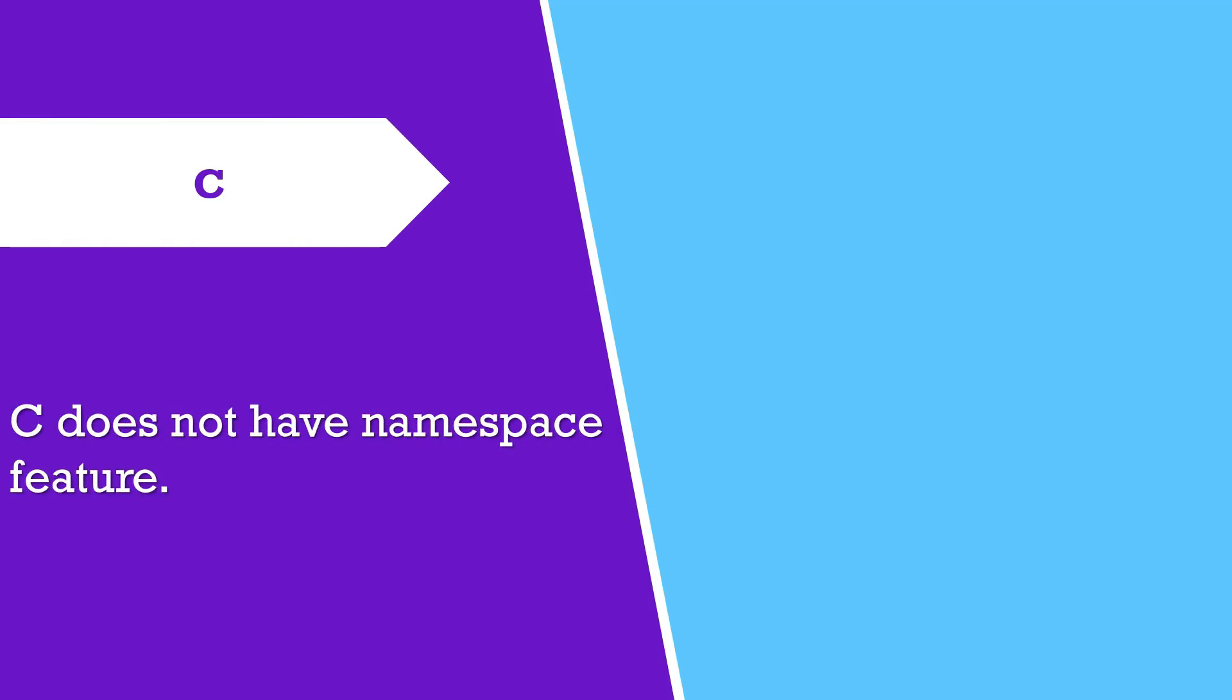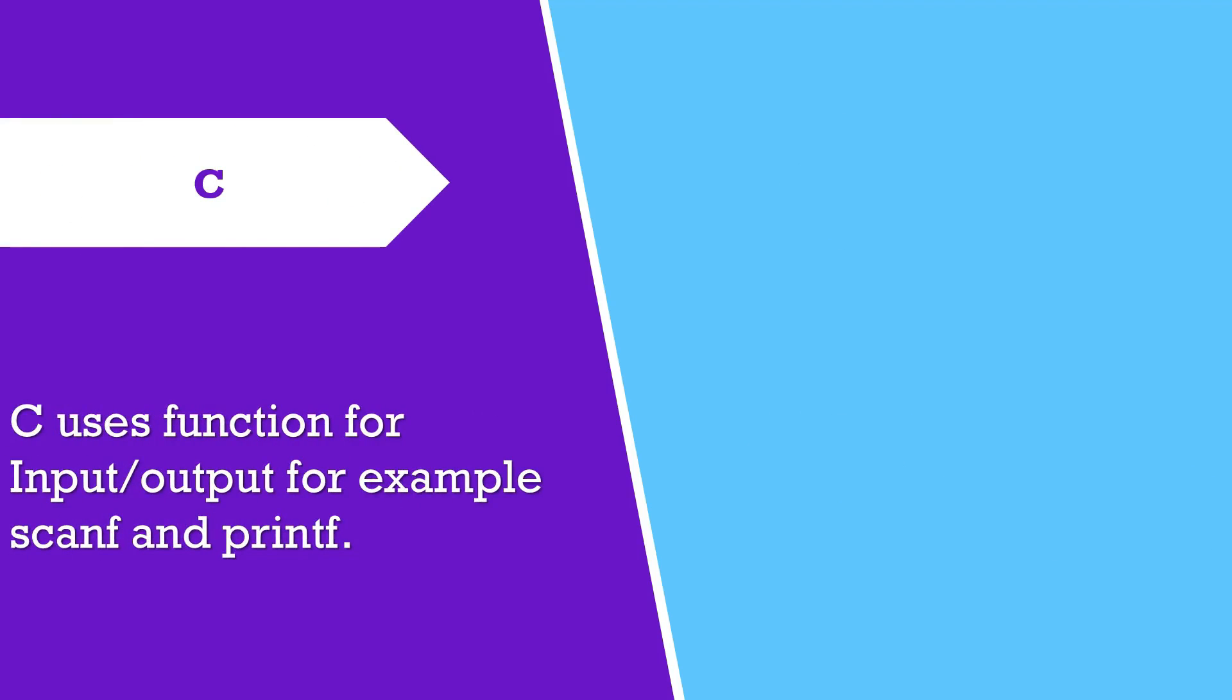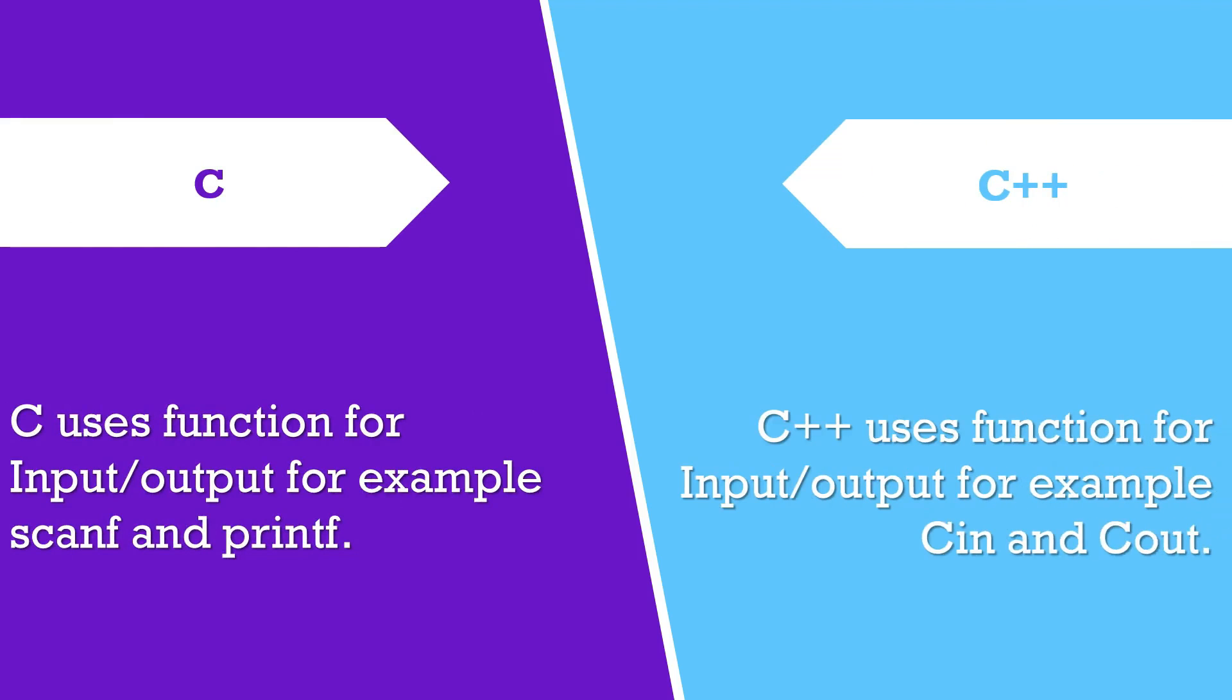C does not have namespace feature. C++ uses namespace which avoids name collisions. C uses functions for input/output, for example scanf and printf.